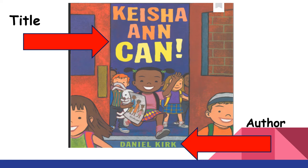While you're trying to identify the characters, look at the title. The title of a book tells you a lot. In this case, the title of the book is called Keisha Ann Can. So Keisha Ann is a name of a person — do you think that maybe this is the character that we're going to be looking for?